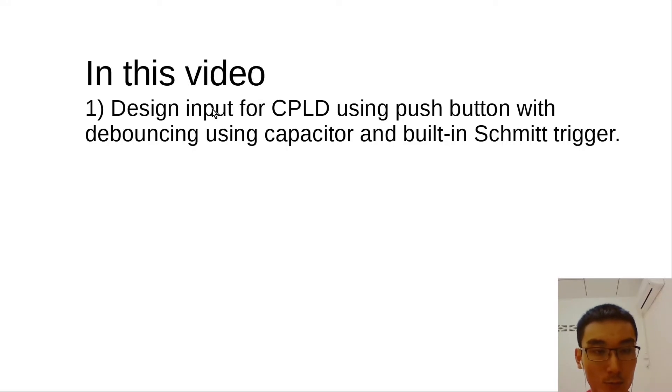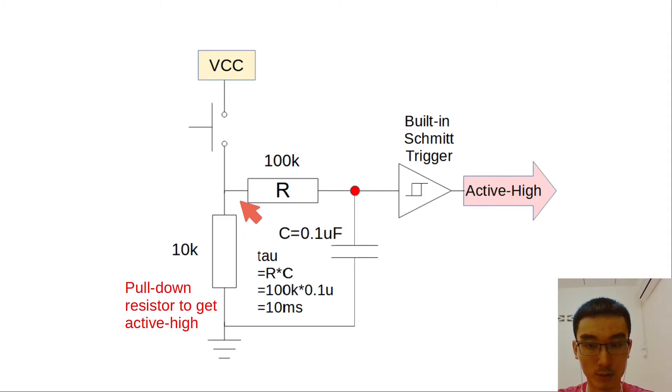In this video we will see how to properly design inputs for CPLD using a push button with debouncing using a capacitor and built-in Schmitt trigger. This is the circuit to get active high input. We have VCC, a push button, and a 10k pull-down resistor to get active high.